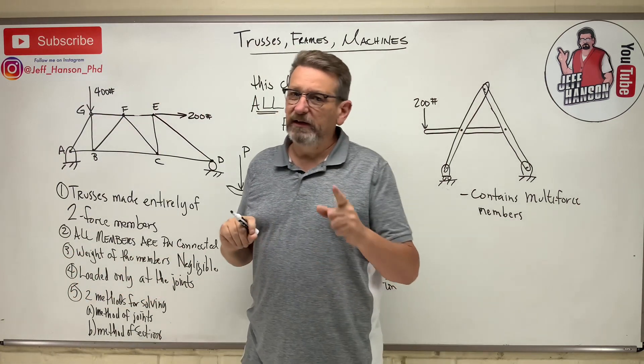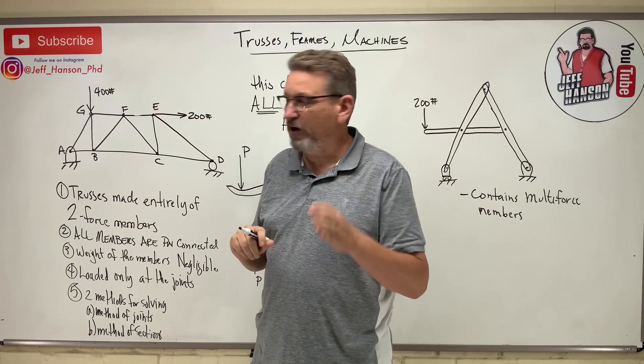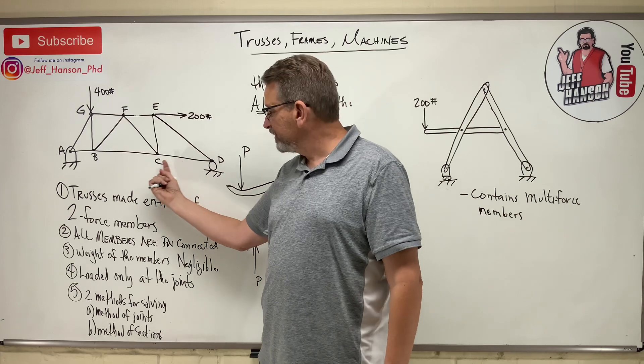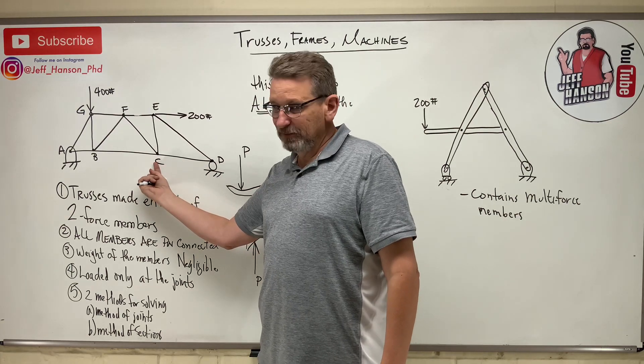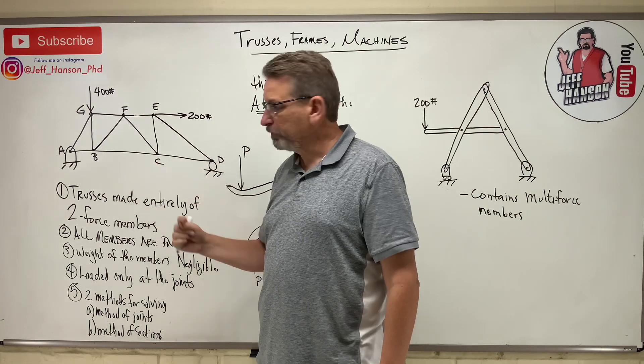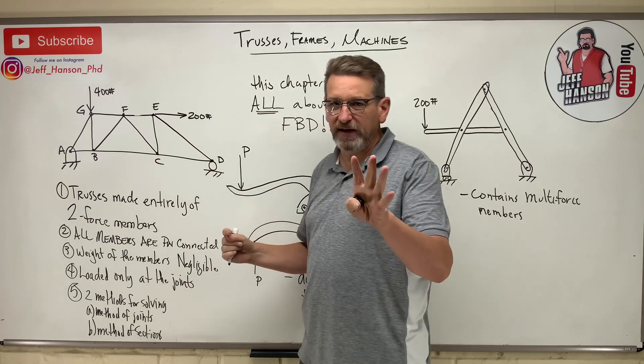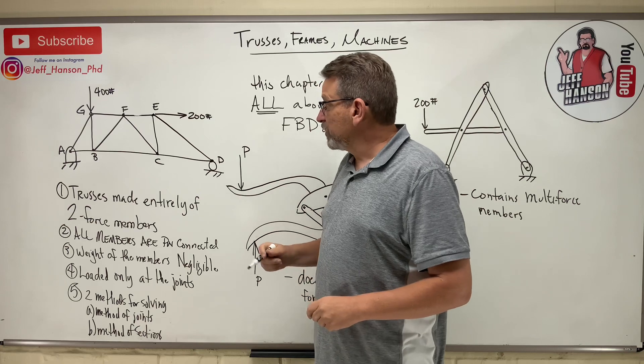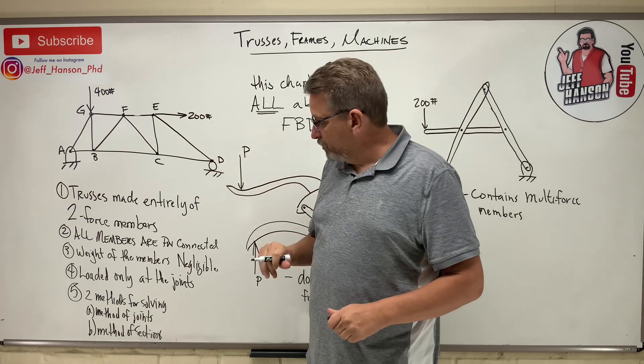If you want to see a really sad example of that, go look at the FIU bridge collapse in Florida. Really horrible thing that should have never happened. The bridge they were moving was supported here, it wasn't supported here, and it just couldn't hold. It broke. There were some other factors, but that was definitely one of the factors. Anyway, trusses are always loaded at the joints.